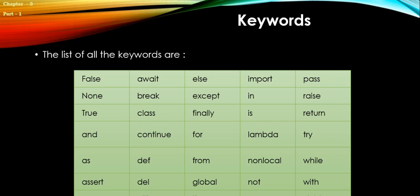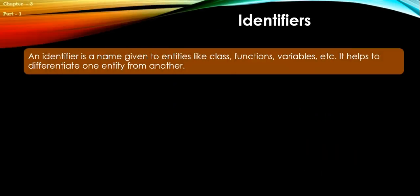Now let's see identifiers. An identifier is a name given to entities like class, functions, variables, etc. It helps to differentiate one entity from another. In Python there are rules for writing identifiers.